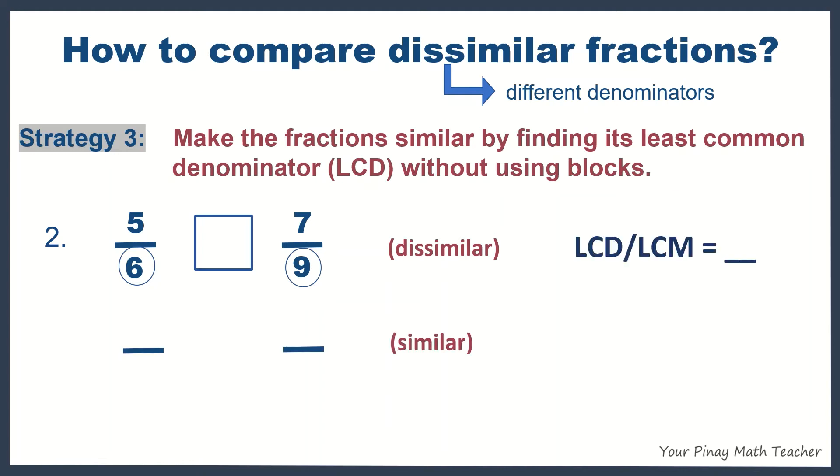So, first, find the LCD by listing the first few multiples of 6 and the first few multiples of 9. Based on the list, our least common multiple or LCD is 18.